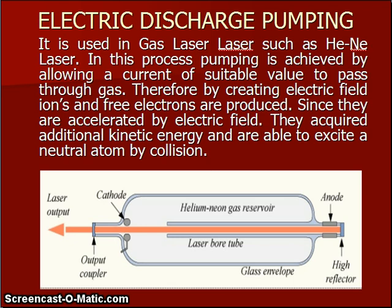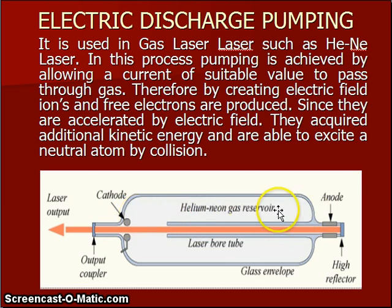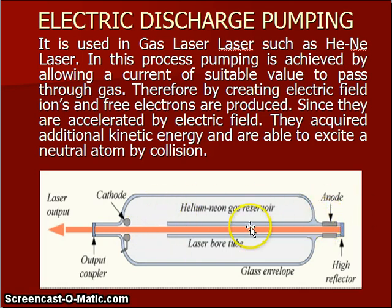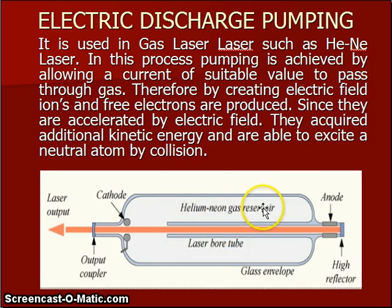The second type of pumping is electric discharge pumping. Electric discharge pumping takes place in the case of gas lasers, such as helium-neon laser. In this process, pumping is achieved by allowing a current of suitable value using a cathode and anode. By creating an electric field, ions and free electrons are produced inside the gas. They are accelerated by the electric field, acquire additional kinetic energy, and are able to excite a neutral atom by collision.